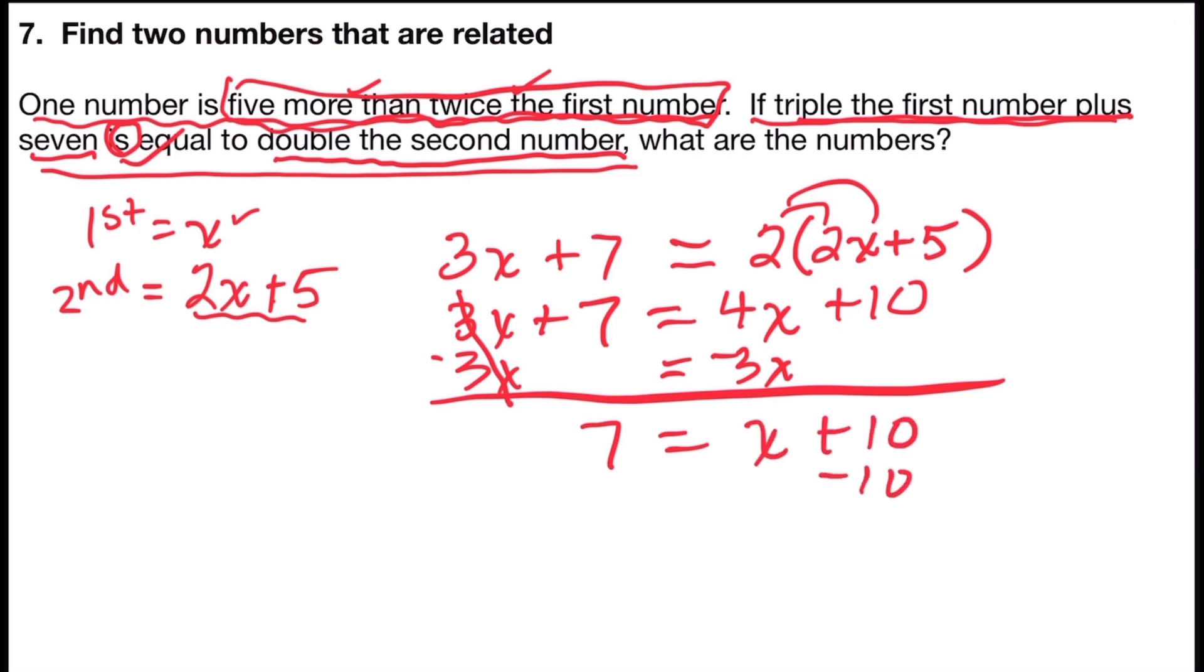Now I'll subtract 10 from both sides. Seven minus 10 is negative three. 10 minus 10 is zero. Zero plus x is x. And my coefficient is already one. Remember, there's a hidden one there. So x is equal to negative three.